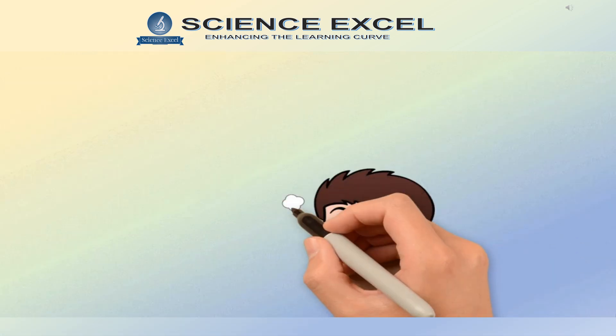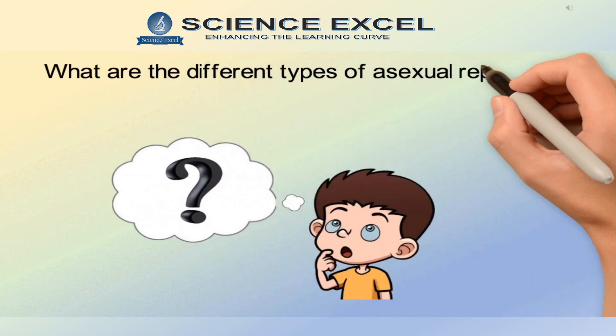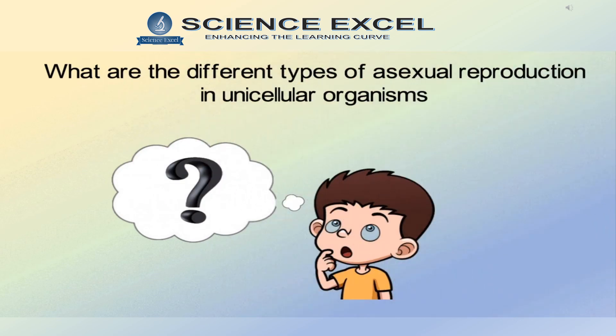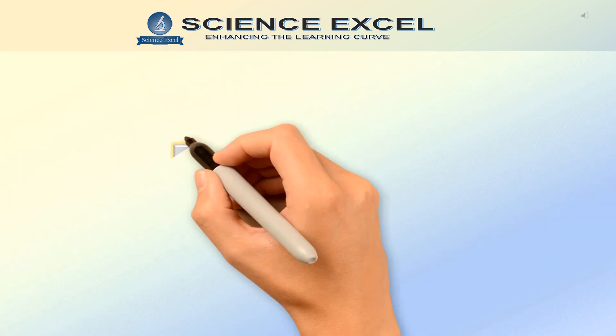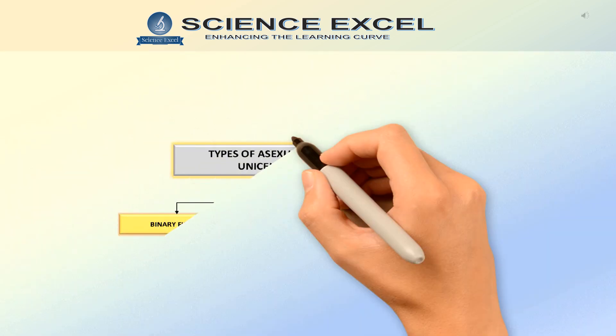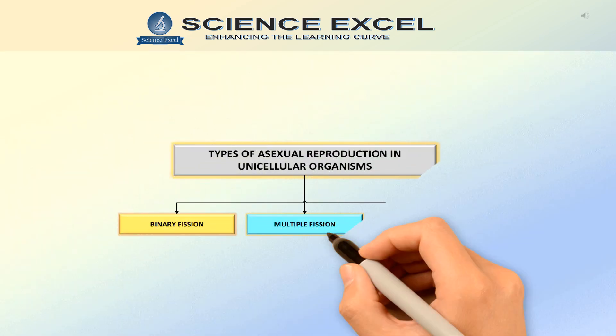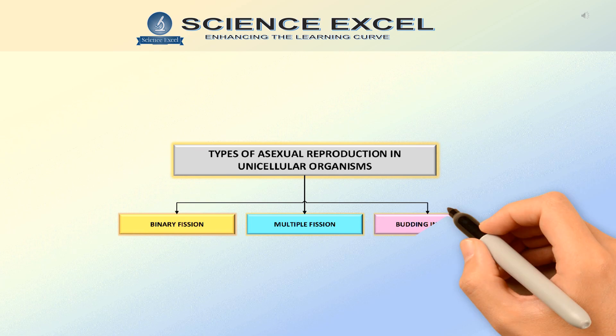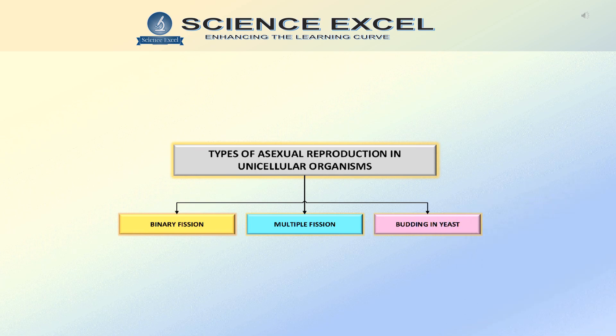You must be wondering, what are the different types of asexual reproduction in unicellular organisms? Asexual reproduction in unicellular organisms is of three types: binary fission, multiple fission, and budding in yeast. Now let's understand each type in detail.